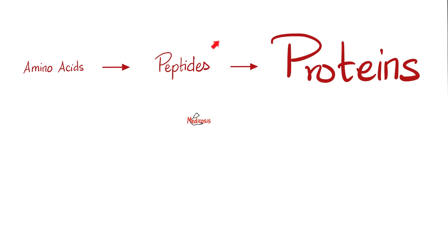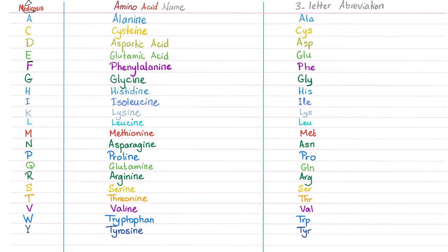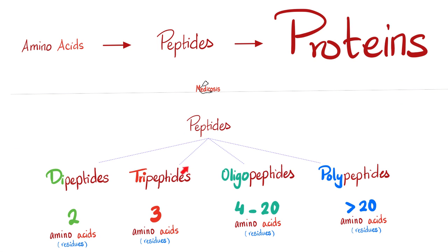Proteins are made of peptides, which are made of amino acids. Are all of the amino acids coded by a genetic code? Only the proteogenic ones are. Are all of them incorporated into proteins? Only the proteogenic ones are. The famous 20 amino acids — each one has a name, one letter abbreviation, and a three letter abbreviation, as we discussed before. We have dipeptides, tripeptides, oligopeptides, and polypeptides.